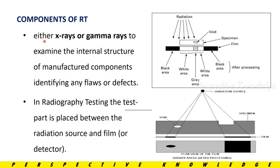Components of RT include: X-rays or Gamma-rays as the main sources. The test part is placed between the radiation source and the film — radiation source, specimen, and film. In the film, we observe the output: if there is no material defect, it will appear white; if there is a defect or problem, we will know the difference in grey shading.